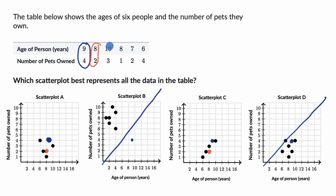Let's keep going. 10 years old and three pets. 10 years old and three pets, it's on A. 10 years old and three pets, it's not on C. So we can rule that out. And so we can say that scatter plot A represents all the data in the table.